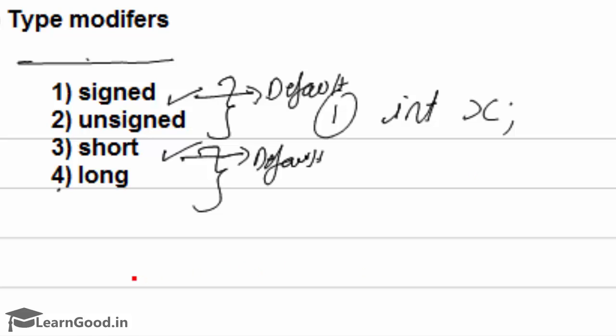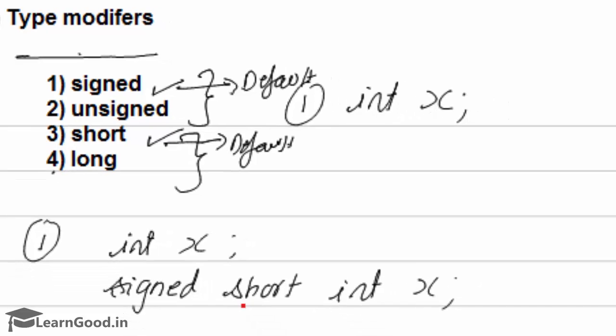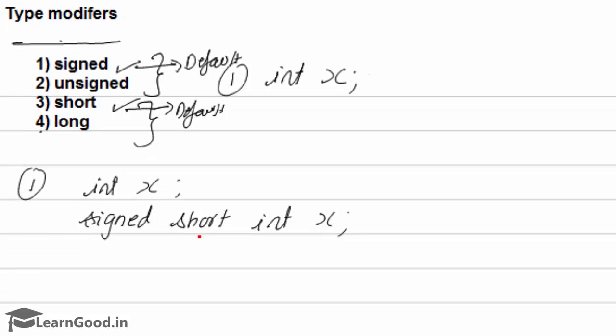That means whenever I give here int x, this will be taken as signed short int x. That means when it is signed, the last bit will be used as a sign bit. And short, we are asking it to occupy 2 bytes.